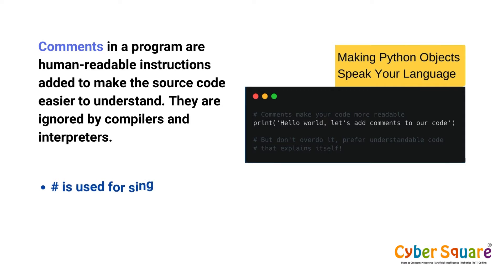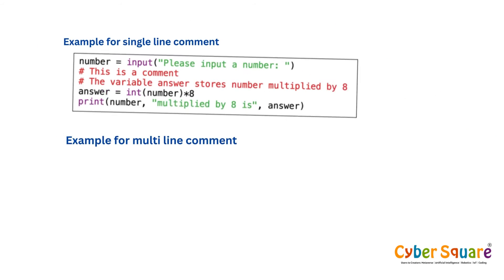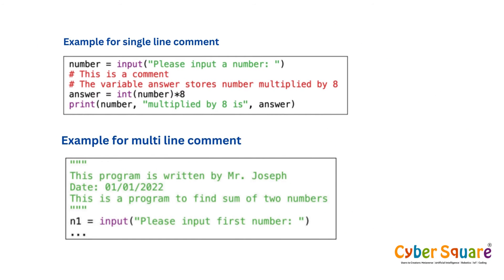Comments in a program are human-readable instructions added to make the source code easier to understand. They are ignored by compilers and interpreters. Hash (#) is used for single-line comments and triple-quote (""") is used for multiline comments. Here are examples of single and multiline comments for your reference.